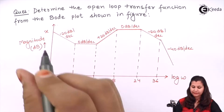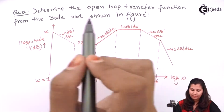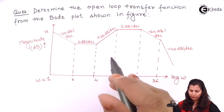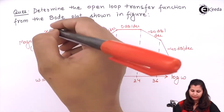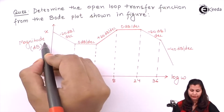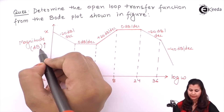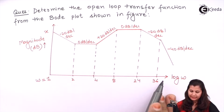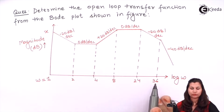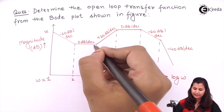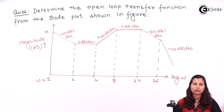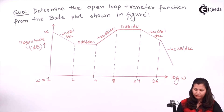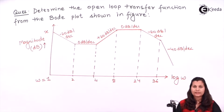Our problem is to determine the open loop transfer function from this Bode plot, as shown in the figure. On the y-axis we have the magnitude in decibels (dB), and on the x-axis we have the frequency log omega. The frequency scale is divided as 1, 2, 4, 8, 24, 36. This is the resultant magnitude plot of the system, and from this magnitude plot we have to determine the transfer function.